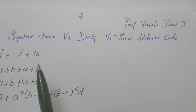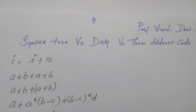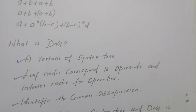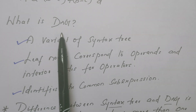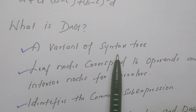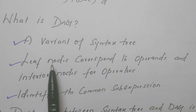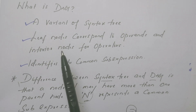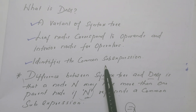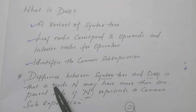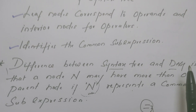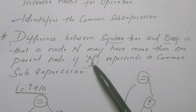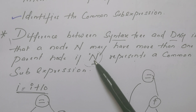Now for these expressions, I have taken four expressions here. We are going to construct syntax tree, DAG as well as three address code. DAG - the acronym is directed acyclic graph. It is a variant of syntax tree. Leaf nodes in the DAG represent the operands and the interior nodes represent the operators. The purpose of DAG is to identify the common sub-expression in the given expression. The major difference between the syntax tree and the DAG is, if there is a node n that represents a common sub-expression, then that node n may have more than one parent.